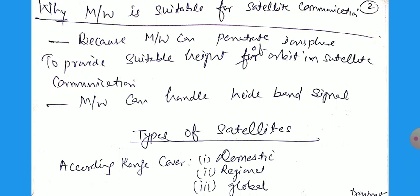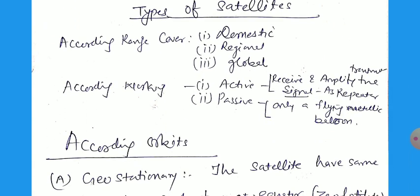Now the different types of satellites. According to range covered, satellites can be domestic, regional, and global — domestic for a particular station, regional for a particular area, and global for international use. According to working, they are active or passive. The active satellite receives the signal from a transmitter on earth, amplifies it, and transmits it back to earth. The passive satellite is only a flying metallic balloon — it receives signals and reflects them back, with no active devices, so it does not modify the signals in any way.